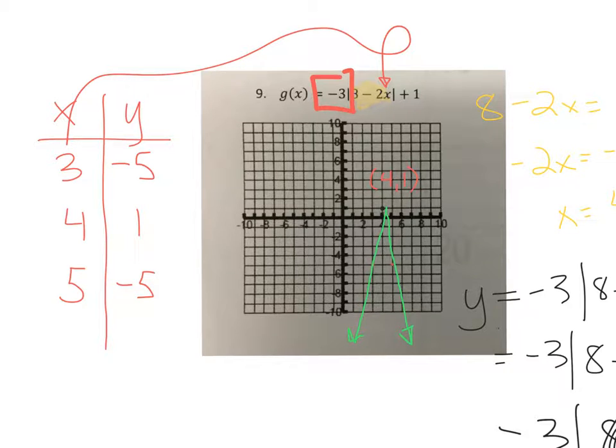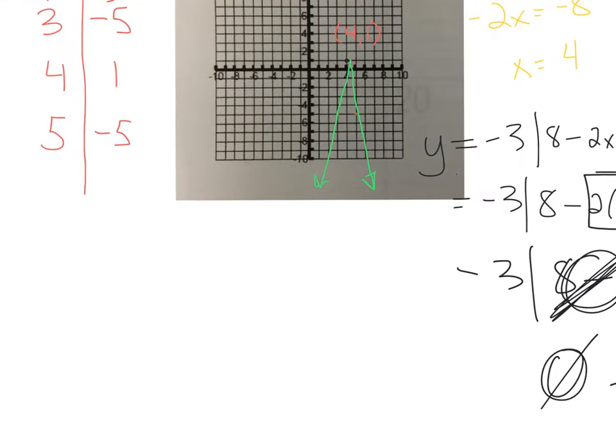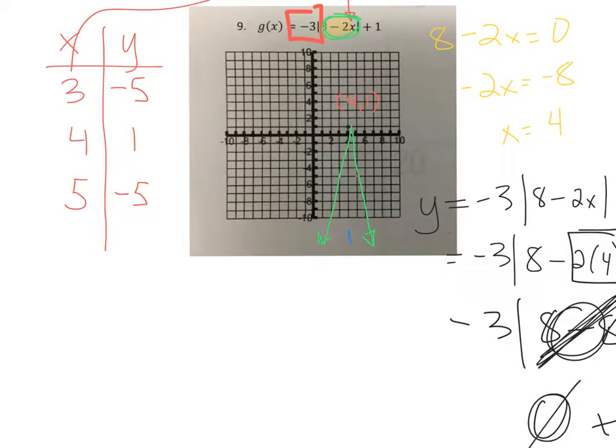You find the x coordinate by just looking at the absolute value stuff. And then you find the y coordinate of the vertex by plugging that number back into the entire equation and solving it down. So now let's create our piecewise function.